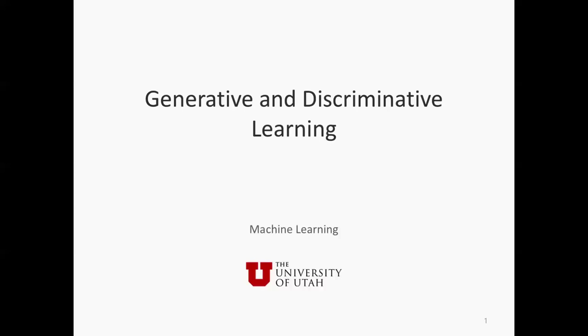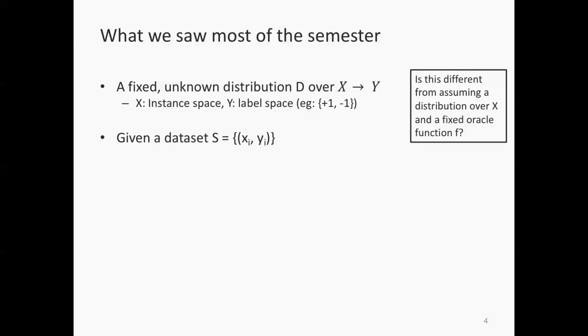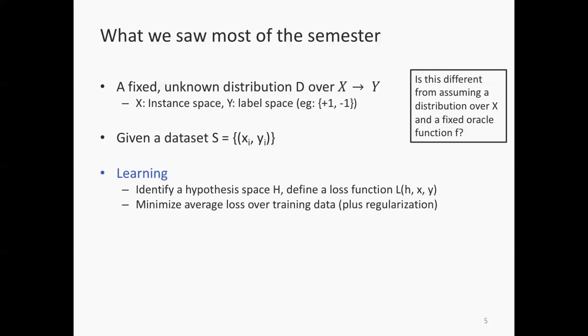This lecture is about generative and discriminative learning. Everything we saw in class so far involved a fixed unknown distribution. There's a hidden function that takes x to y, the instance space to the label space where the label space is {-1, 0, 1}. This is similar to assuming there's a fixed unknown distribution over x and a fixed function. The standard procedure we saw for learning was: you're given a dataset, you want to identify some hypothesis space, and you want to minimize some loss function.